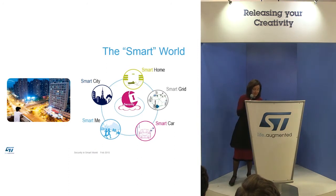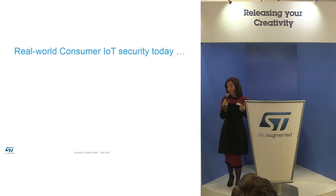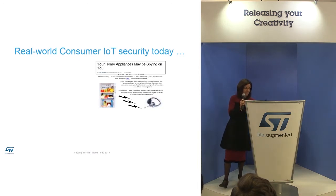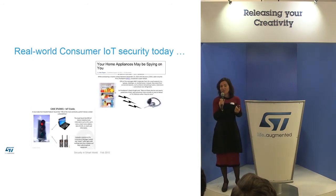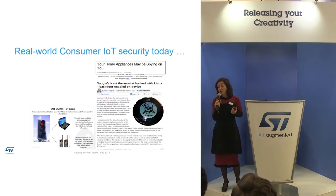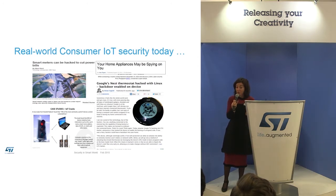We have a lot of examples in the press and in the field of attacks. One really simple example is from December 2013, where some people received a lot of spam coming from home appliances — coming from the fridge, coming from the washing machine. This is really funny for the hacker, but not really funny for the user.